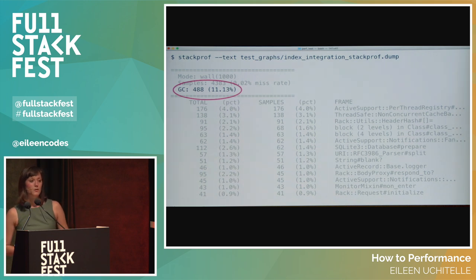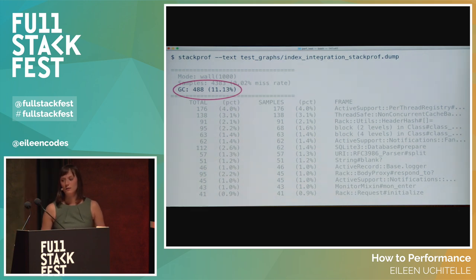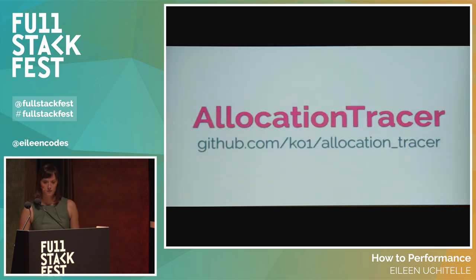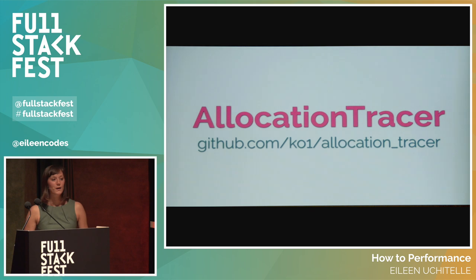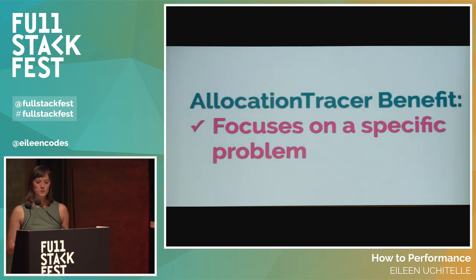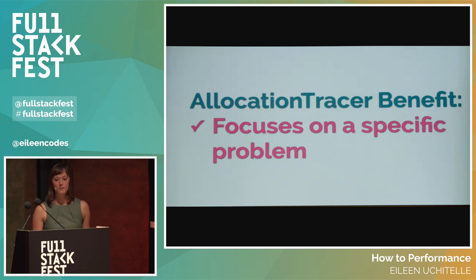One thing we noticed after removing the largest culprits was that we were spending a lot of time in garbage collection — 11.13%. This is because we were creating a lot of objects that needed to be garbage collected. To figure out why, we turned to Allocation Tracer. Allocation Tracer was written by Koichi and is a tool for finding how many objects are being allocated by Ruby and where they are in your code. Allocation Tracer focuses on a specific problem in your Ruby code and helps narrow down unnecessary allocations of objects.